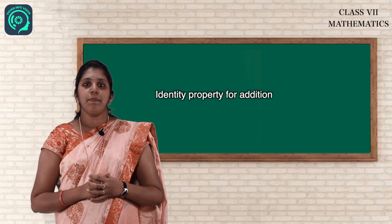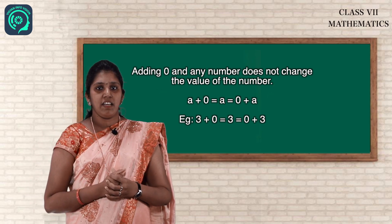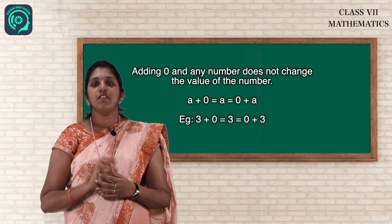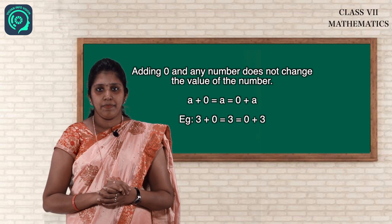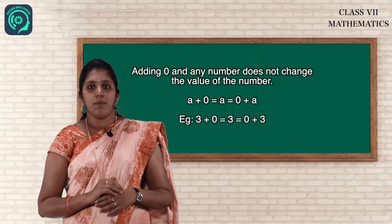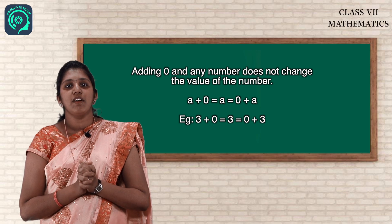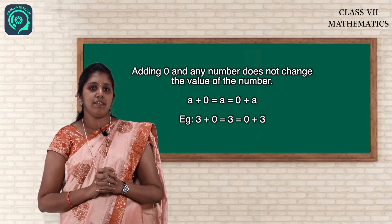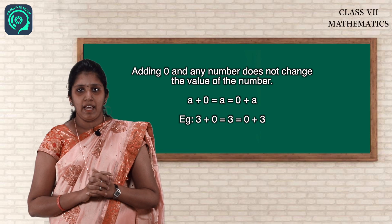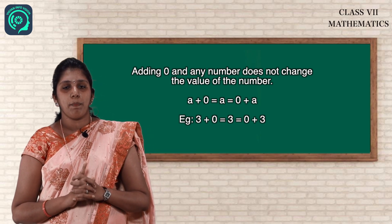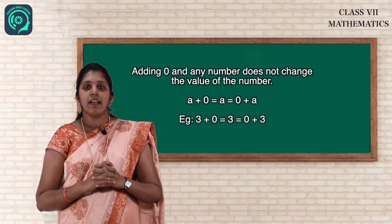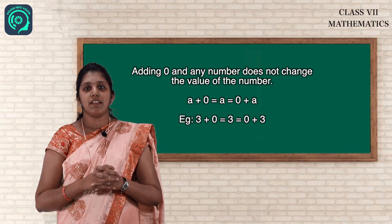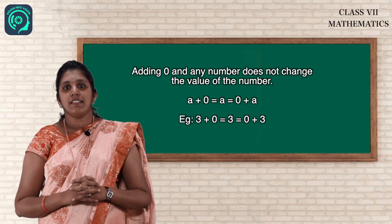Now coming to identity property for addition. Adding 0 to any number gives the same number. For example, 3 plus 0 equals 3. Adding 0 does not change the value of the number. The general form is A plus 0 equals A, which also equals 0 plus A. So 3 plus 0 equals 3 and we can write it as 0 plus 3 also. This is the identity property for addition.